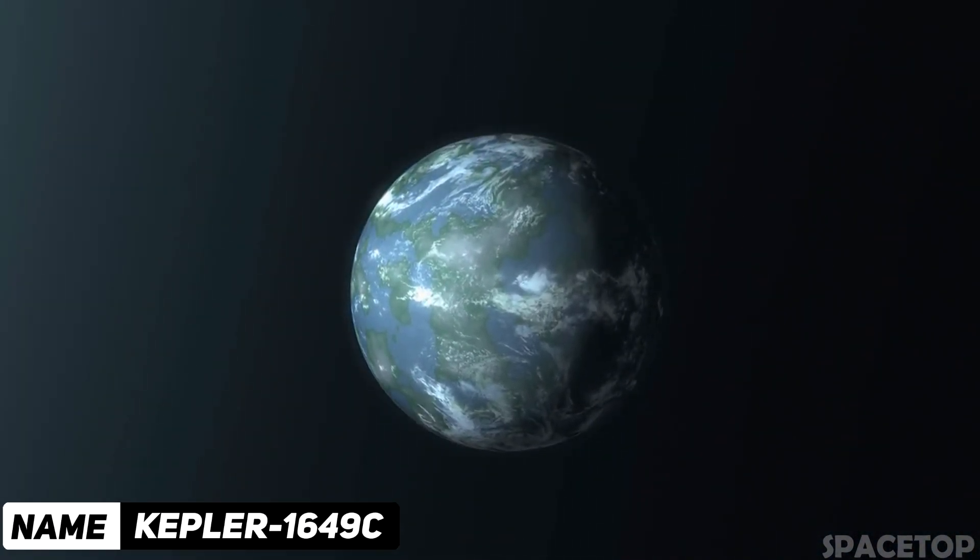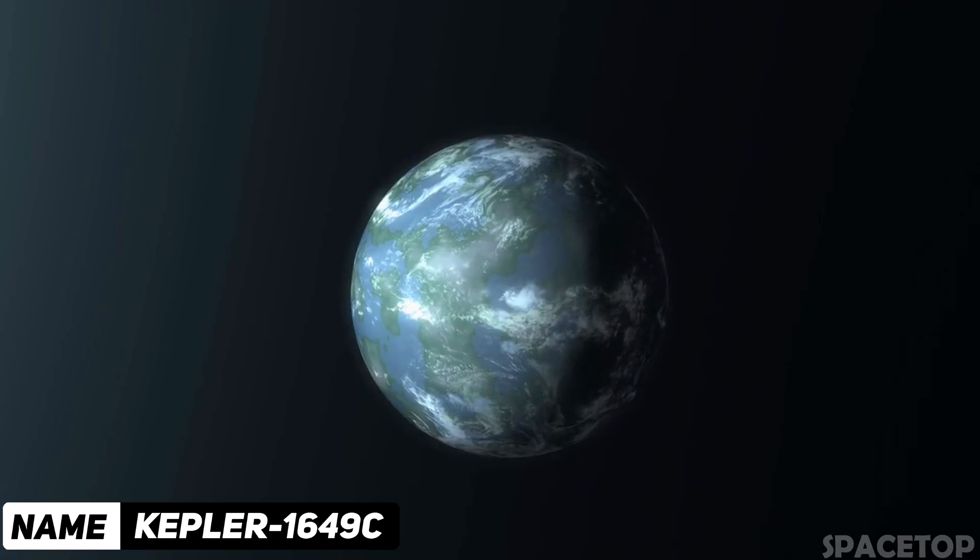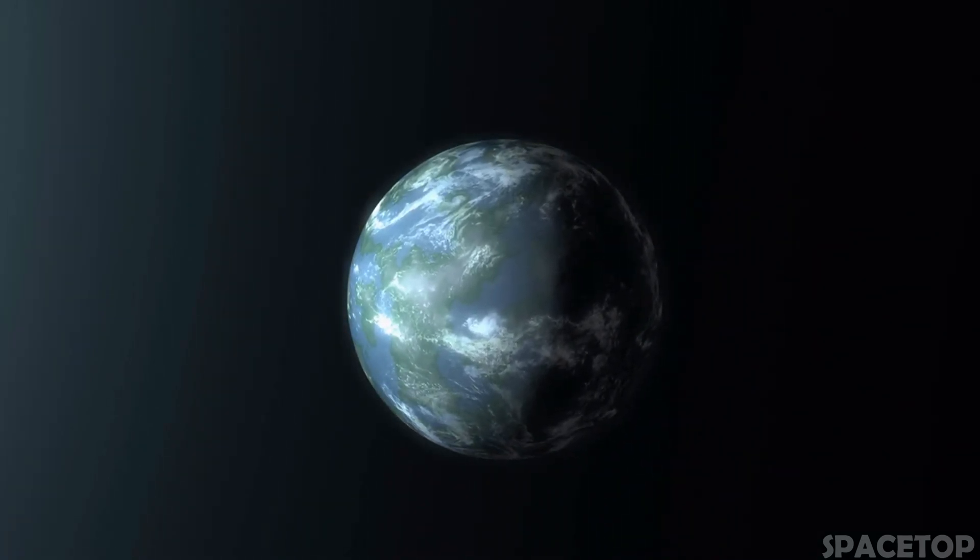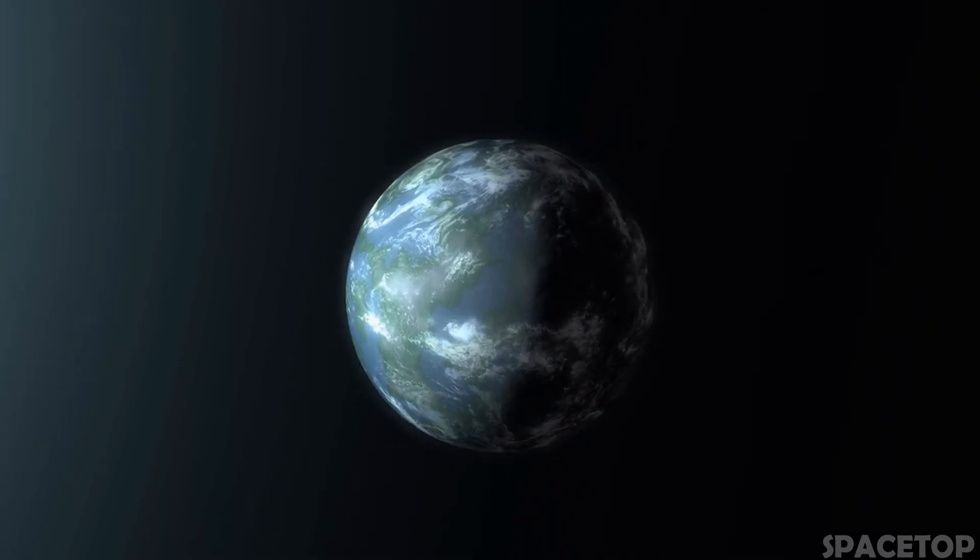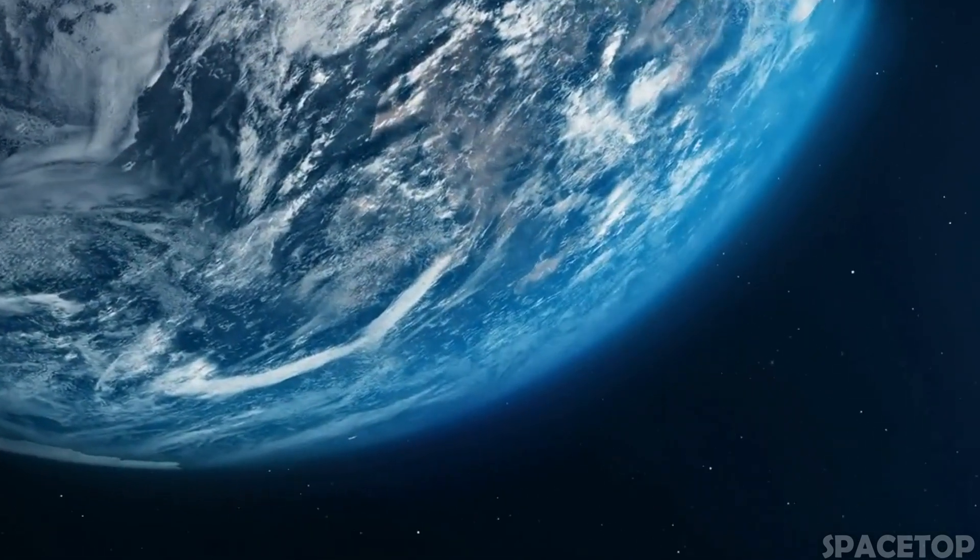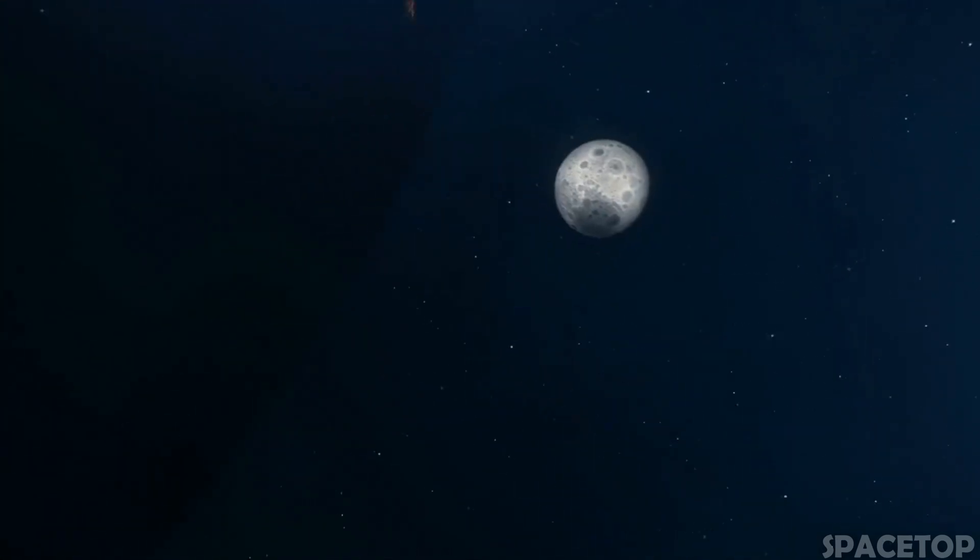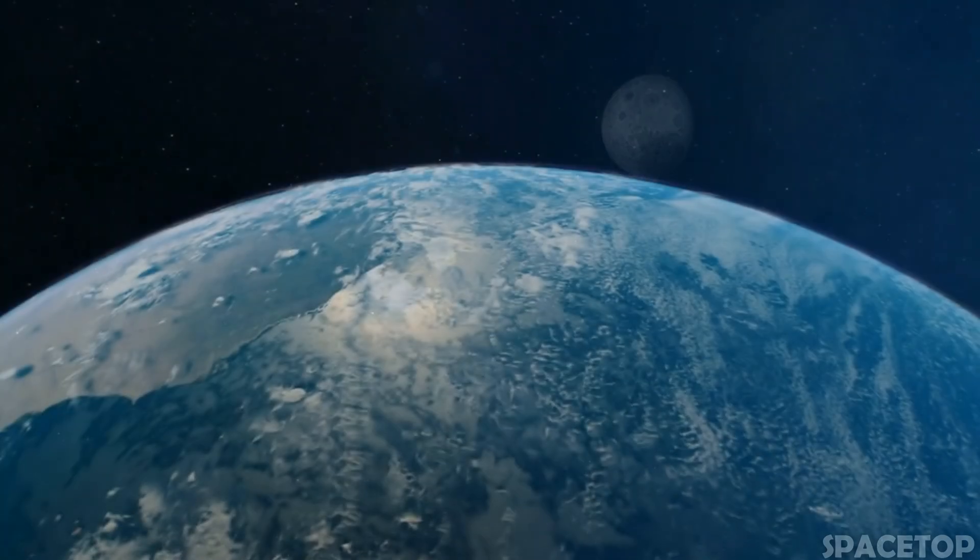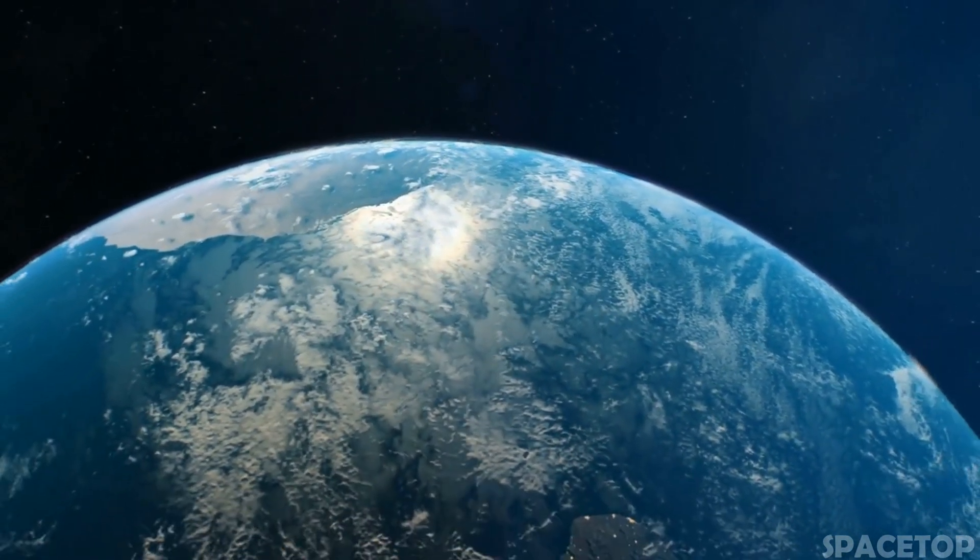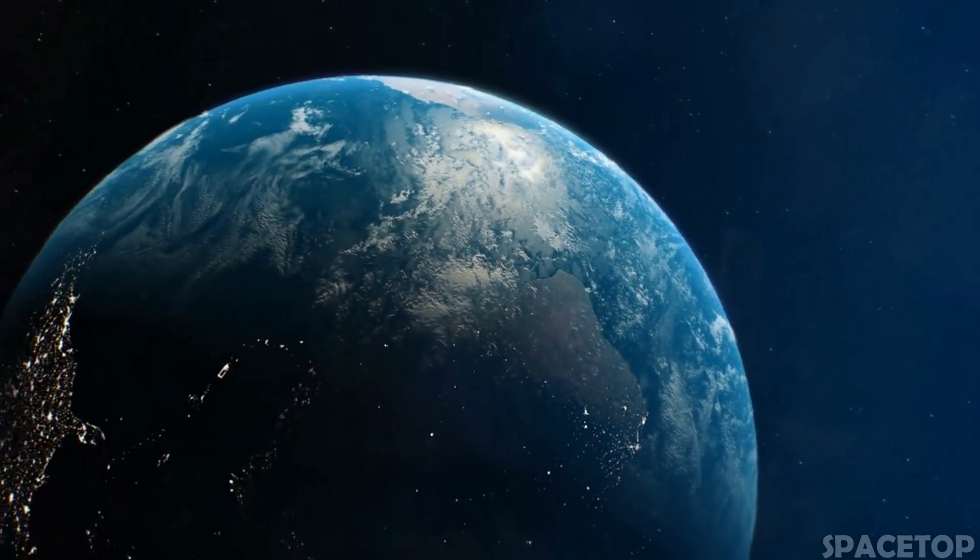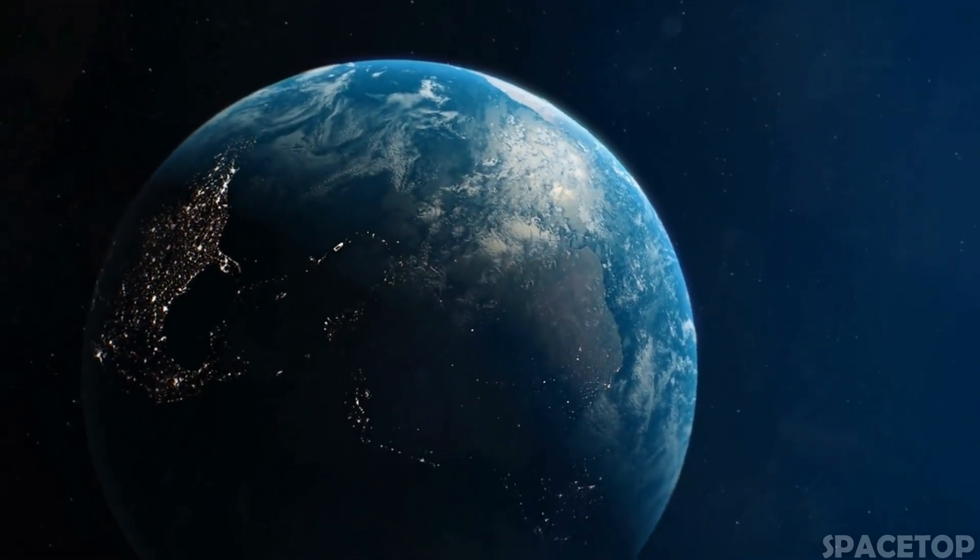One of these planets is Kepler-1649c. In the middle of 2020, looking through the old Kepler data and comparing them with the new data, astronomers confirmed the existence of another exoplanet with very favorable conditions for life. Kepler-1649c, located 300 light years from Earth, is very similar to Earth in size and estimated temperature.